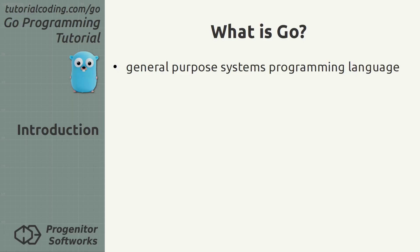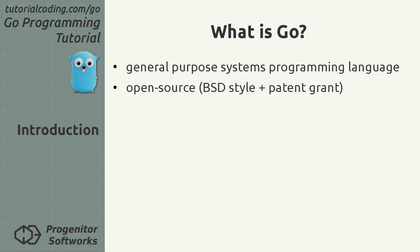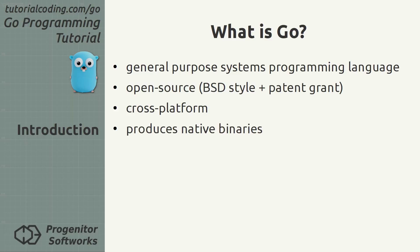What is Go? Go is a general purpose systems programming language, which means that you can build a wide variety of applications with it. Go is an open source programming language, which guarantees that its users won't face any copyright issues ever. Its cross-platform support covers all major operating systems and has ports for some lesser known ones. Go's source code is compiled to a native binary executable or library, resulting in very good performance when running Go applications.